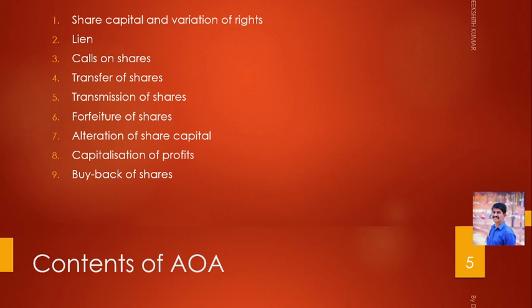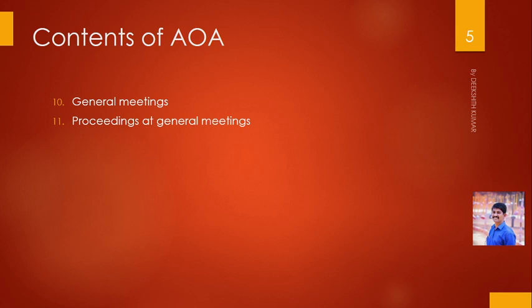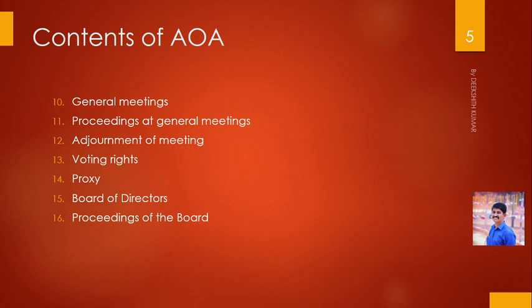Further contents include: adjournment of meeting — when and how meetings are postponed; voting rights — who has voting rights; proxy — who can be called as proxy and how; board of directors; proceedings of the board — what meetings and discussions the board has; chief executive officer, chief finance officer, company secretary, manager, and key managerial personnel — their appointment and remuneration details.